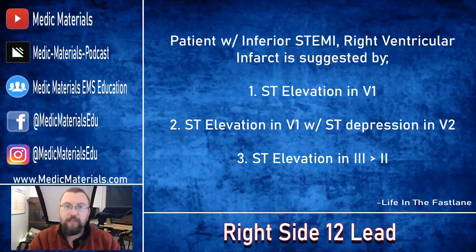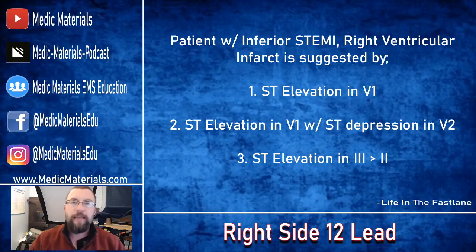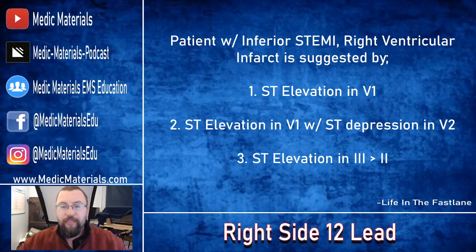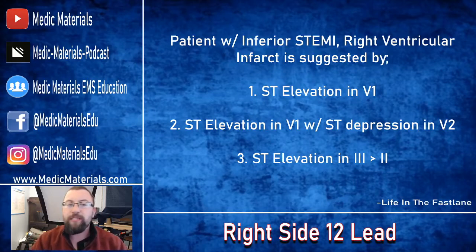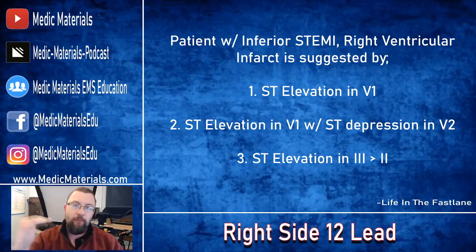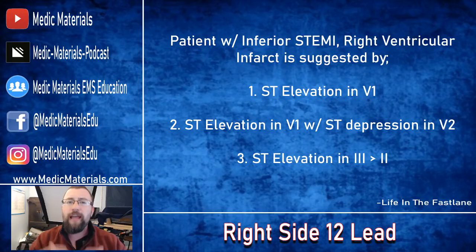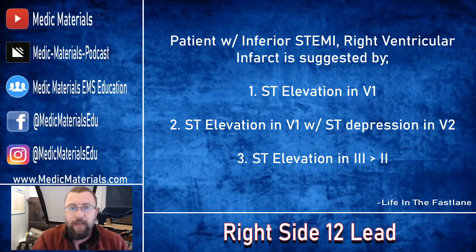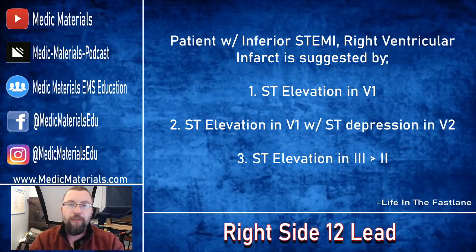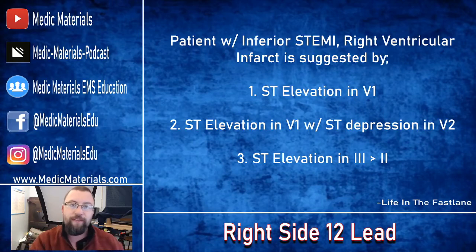Right ventricular infarct is suggested when we see on a standard 12-lead: ST elevation in V1 (the precordial lead V1). If we see ST elevation in V1 with ST depression in V2, then there's probably right ventricular involvement. And lastly, if we see higher ST segment elevation in lead 3 than in lead 2 — all of those are signs on our standard 12-lead that we should be thinking there's right ventricular infarct as well.